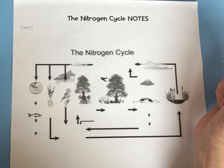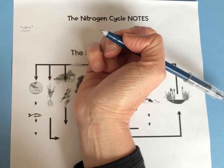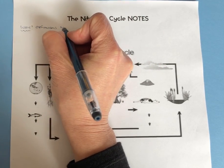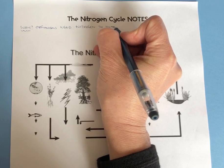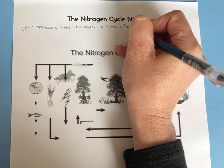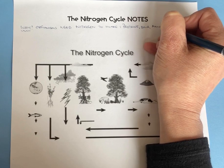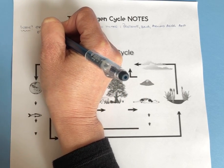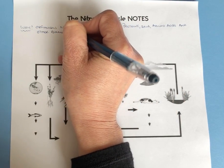DNA also has nitrogen in it. So there are two essential molecules that we need that require nitrogen. Organisms need nitrogen to make proteins — and remember, proteins are enzymes too — DNA, amino acids, which are the building blocks of proteins, and other biomolecules like RNA.